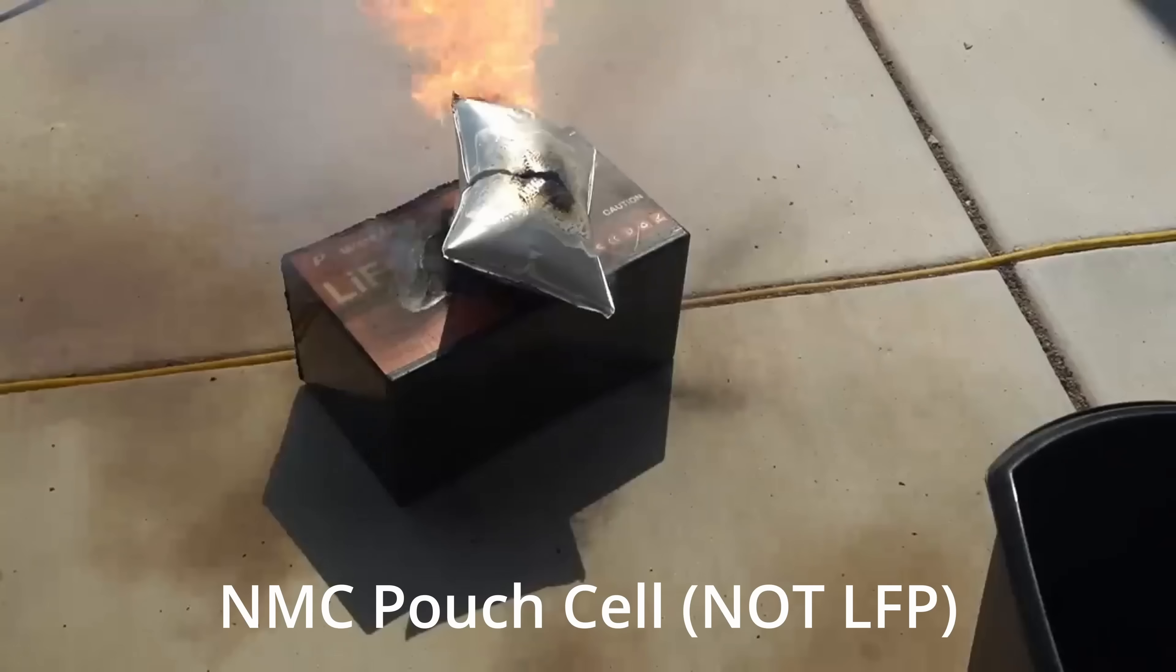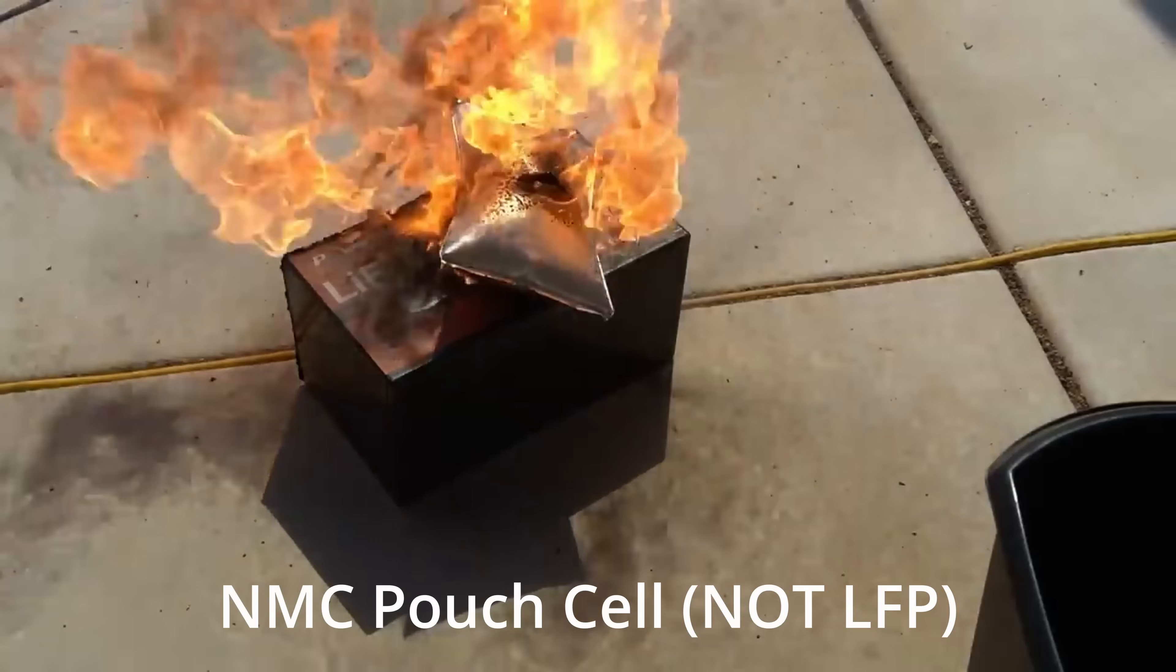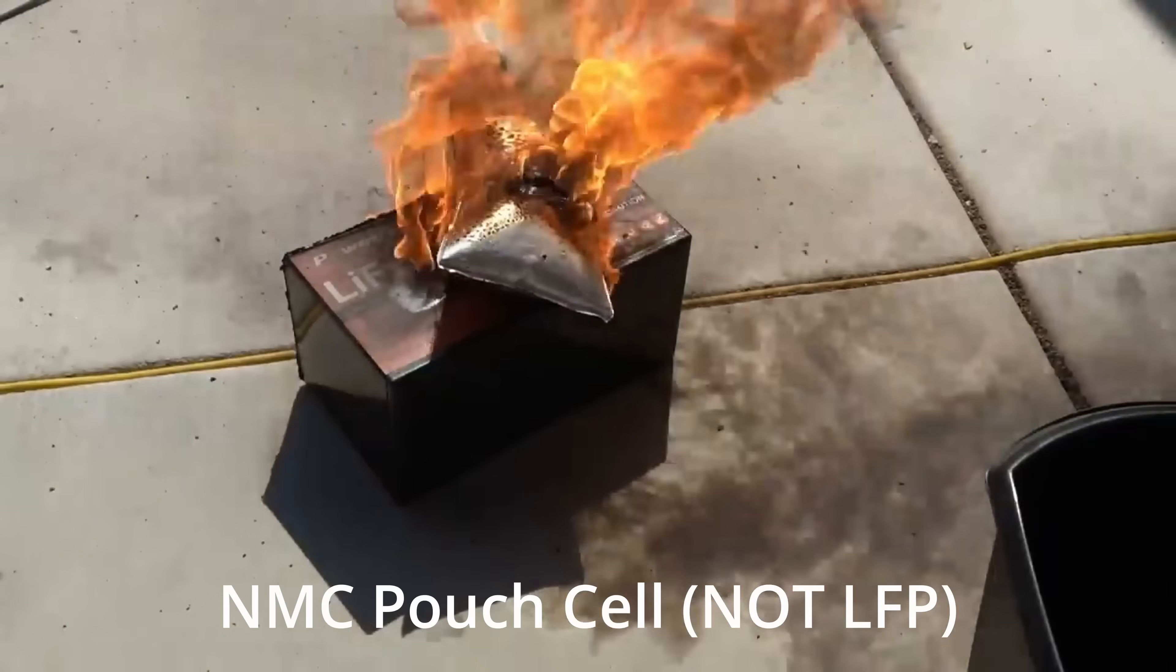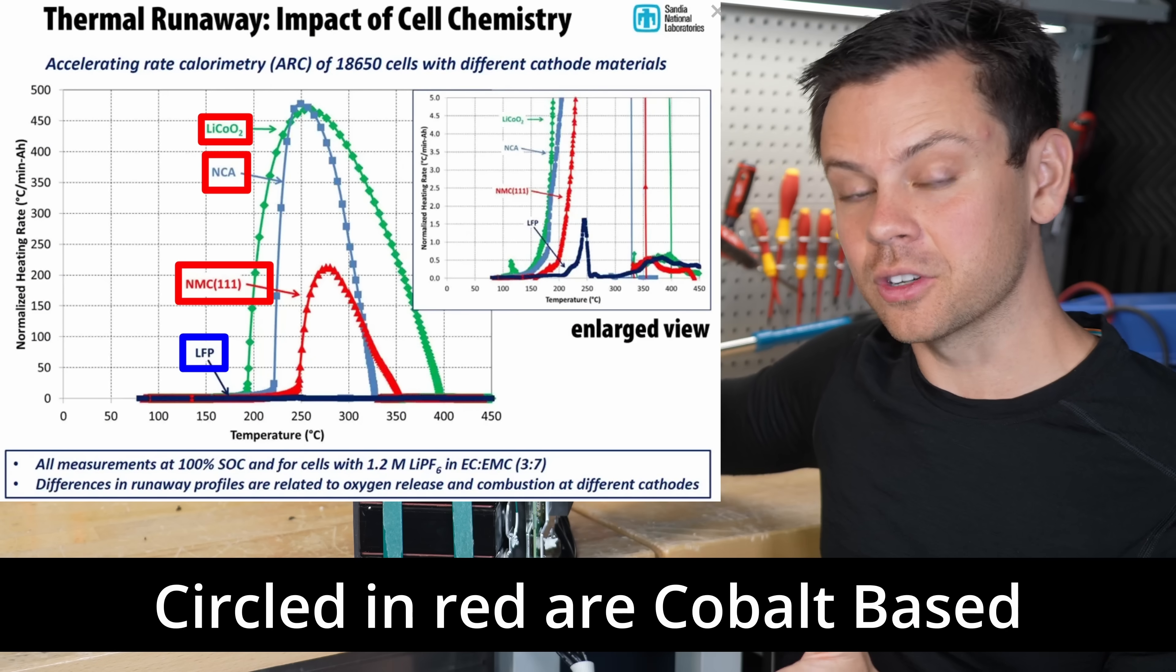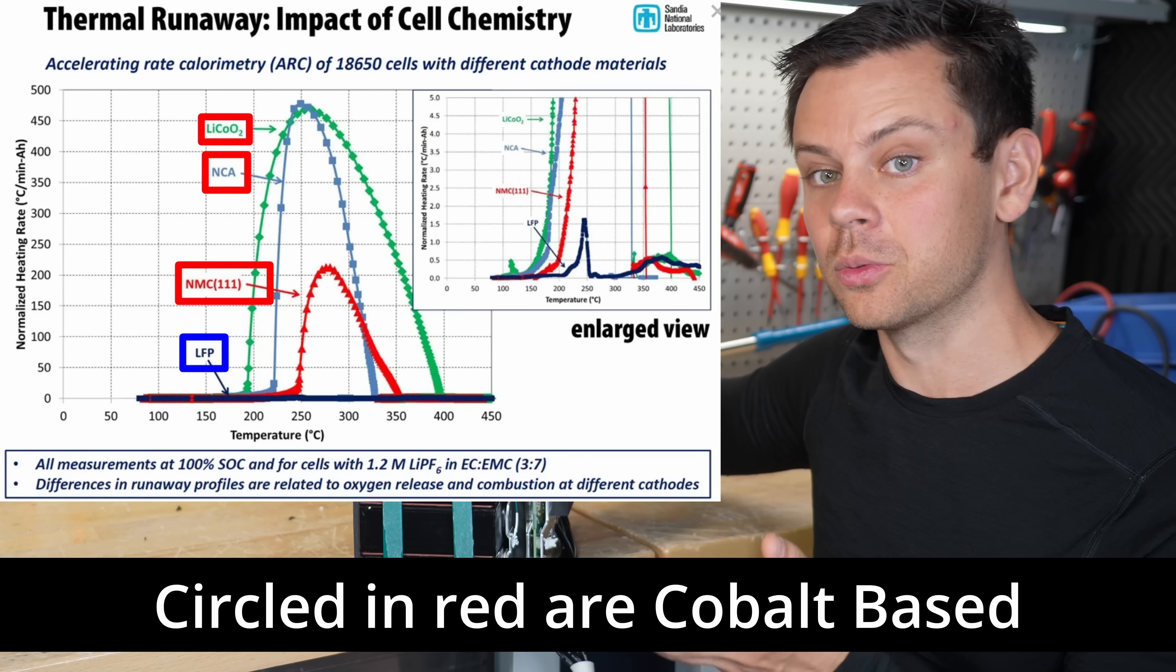And that's what happens with NMC or NCA, which is used in cell phone batteries, electric vehicle batteries, especially in America. But those are cobalt-based chemistries, and they have a self-propagating thermal runaway effect.